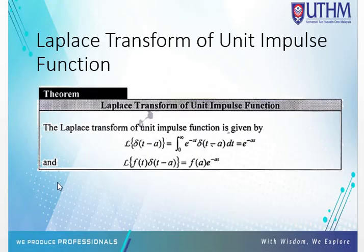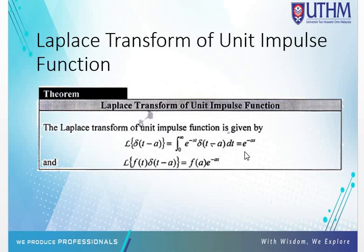Now let's look at the Laplace transform of the unit impulse function. The theorem states: the Laplace transform of delta(t minus a) equals the integral from 0 to infinity of e^(negative st) delta(t minus a) dt, which equals e^(negative as). Additionally, the Laplace transform of f(t) delta(t minus a) equals f(a) times e^(negative as).